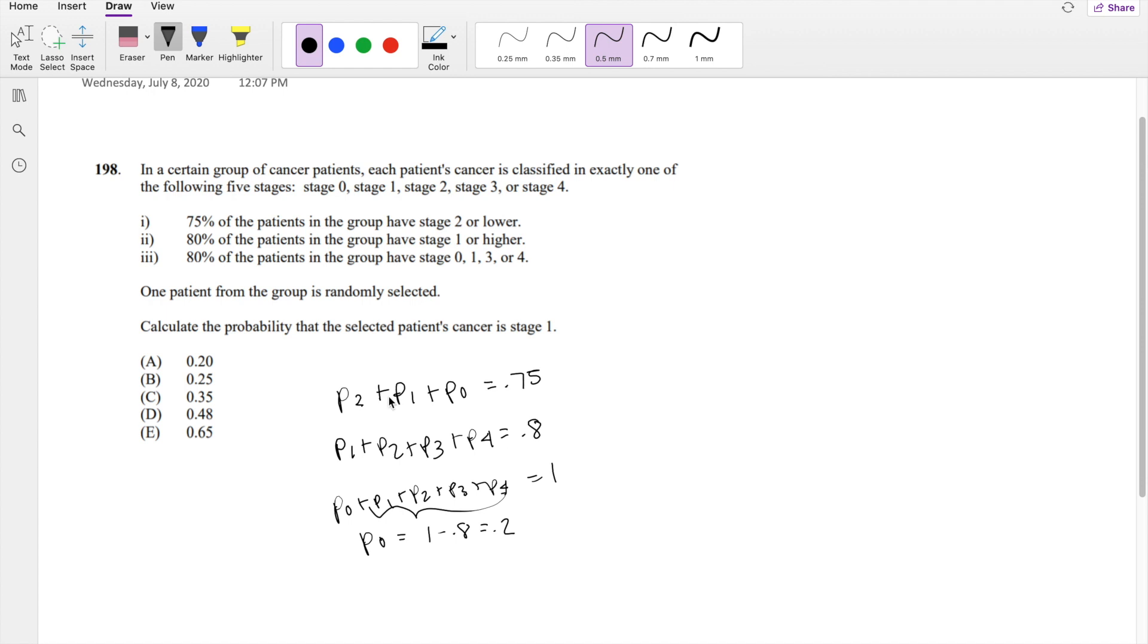So knowing that, we can actually just put that in here. So probability of stage 2 plus stage 1 is equal to 0.75 minus 0.2, which is equal to 0.55.